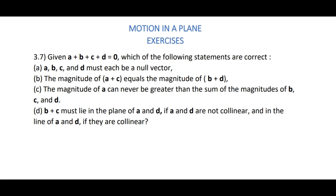Hello students. In this video we are going to discuss problem 3.7 from Motion in a Plane. Given ā + b̄ + c̄ + d̄ = 0, which of the following statements are correct? (A) ā, b̄, c̄ and d̄ must each be a null vector. (B) The magnitude of ā + c̄ equals the magnitude of b̄ + d̄. (C) The magnitude of ā can never be greater than the sum of the magnitudes of b̄, c̄ and d̄. (D) b̄ + c̄ must lie in the plane of ā and d̄ if ā and d̄ are not collinear, and in the line of ā and d̄ if they are collinear.